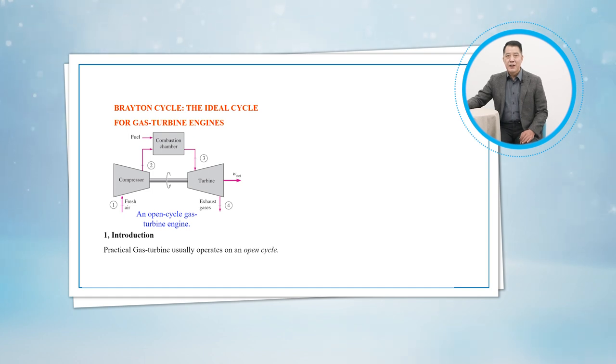The high-pressure air proceeds into the combustion chamber, where the fuel is burned at constant pressure. The resulting high-temperature gases then enter the turbine, where they expand to the atmospheric pressure while producing power. The exhaust gases leaving the turbine are slowing out, causing the cycle to be classified as an open cycle.